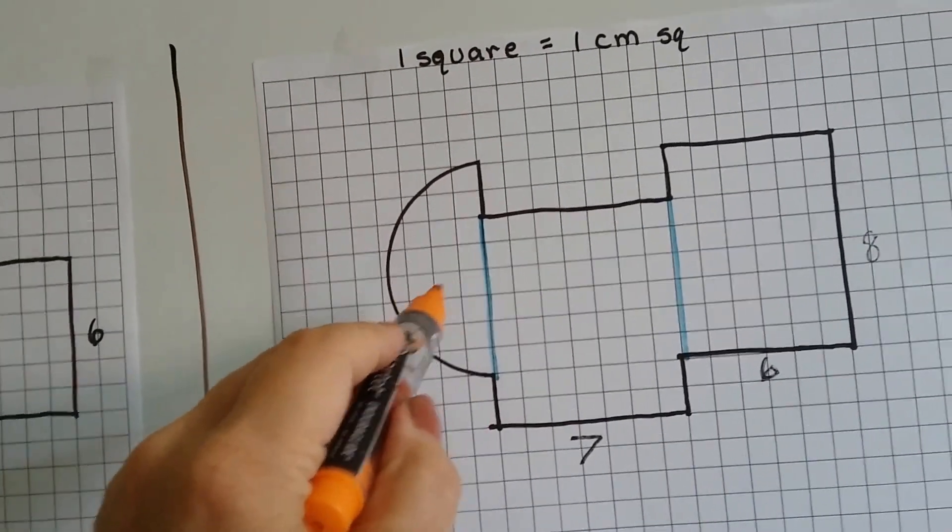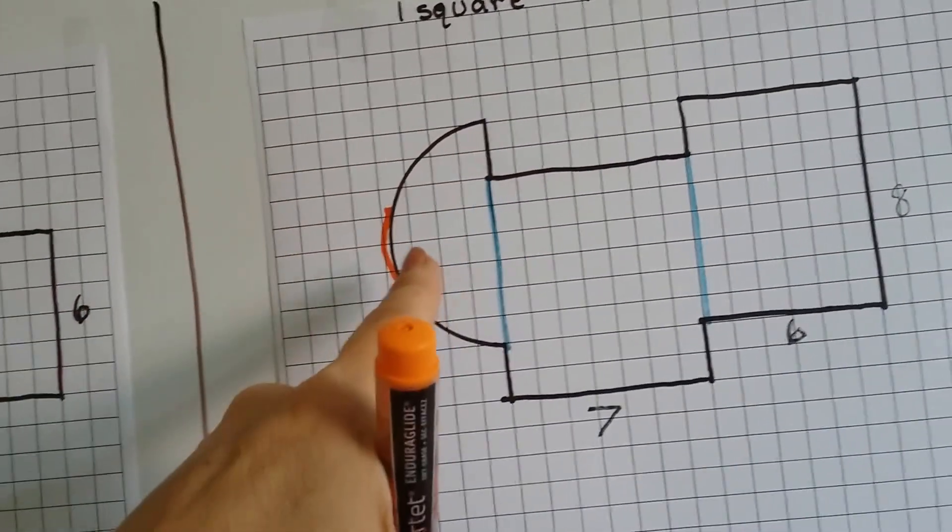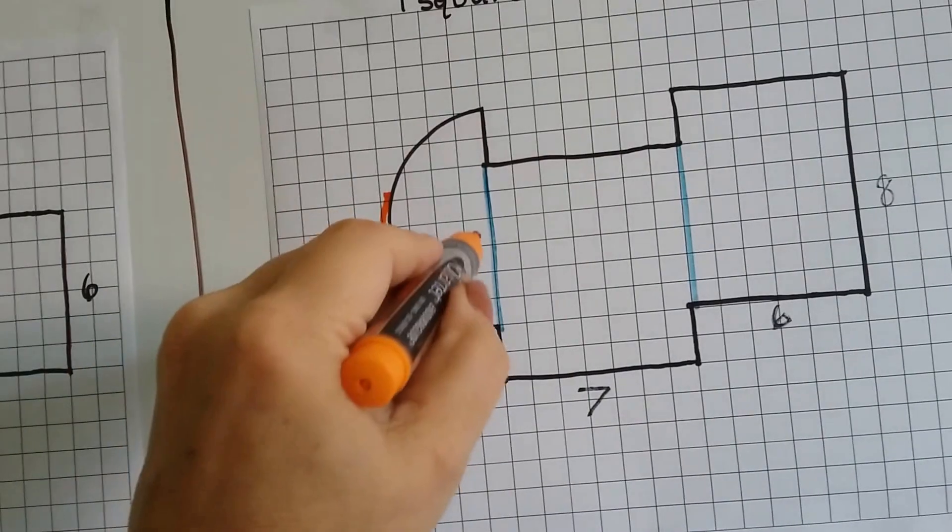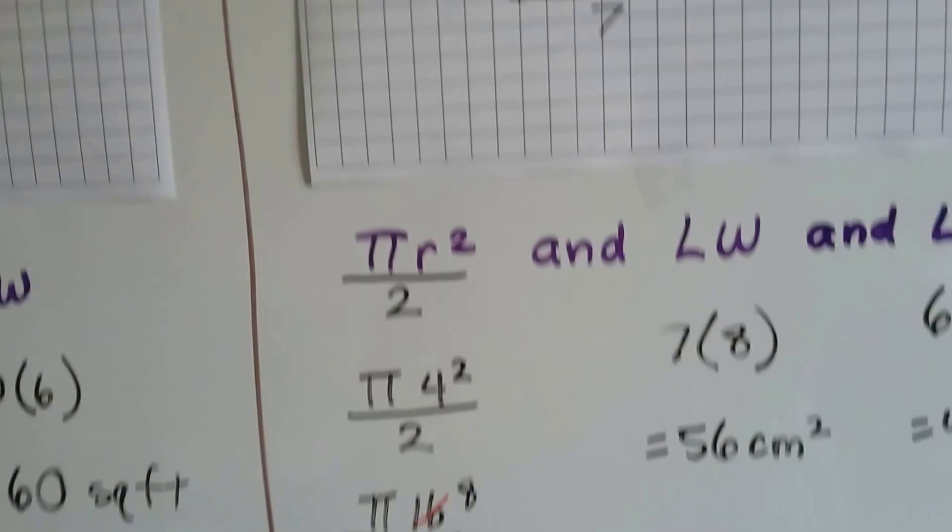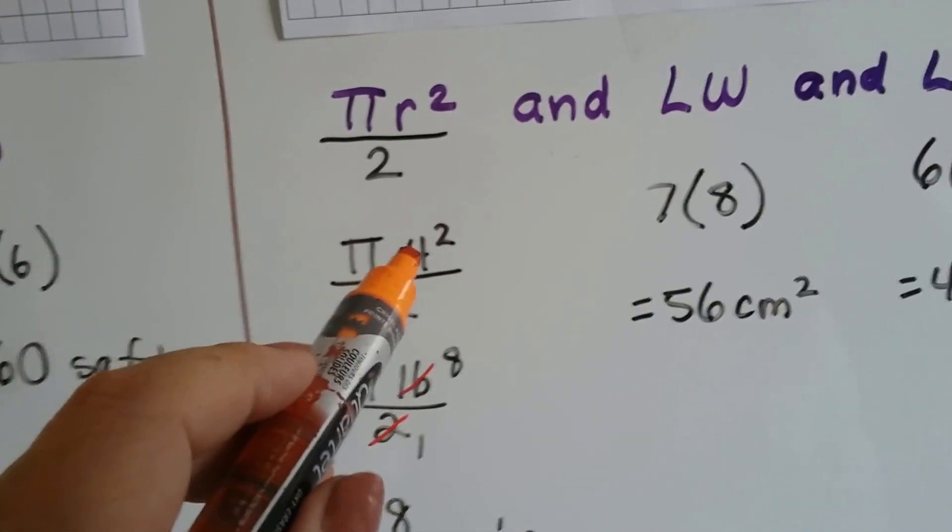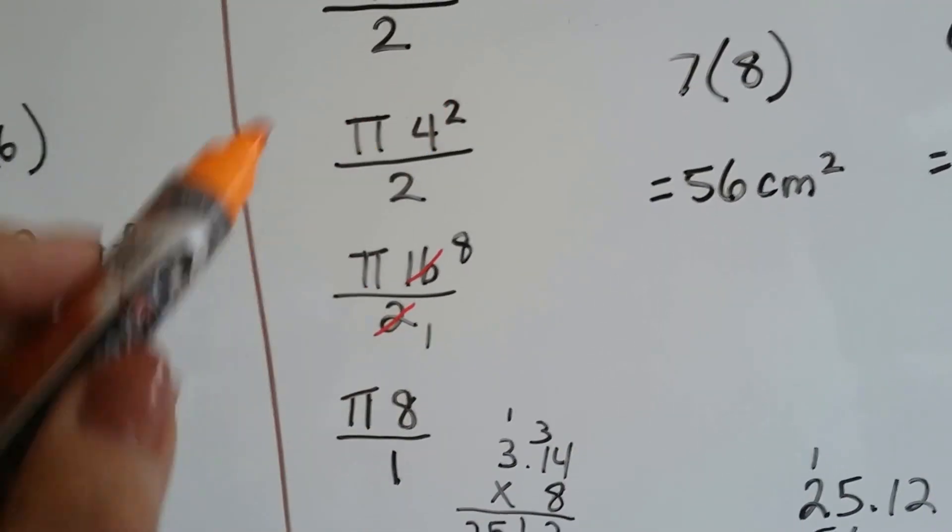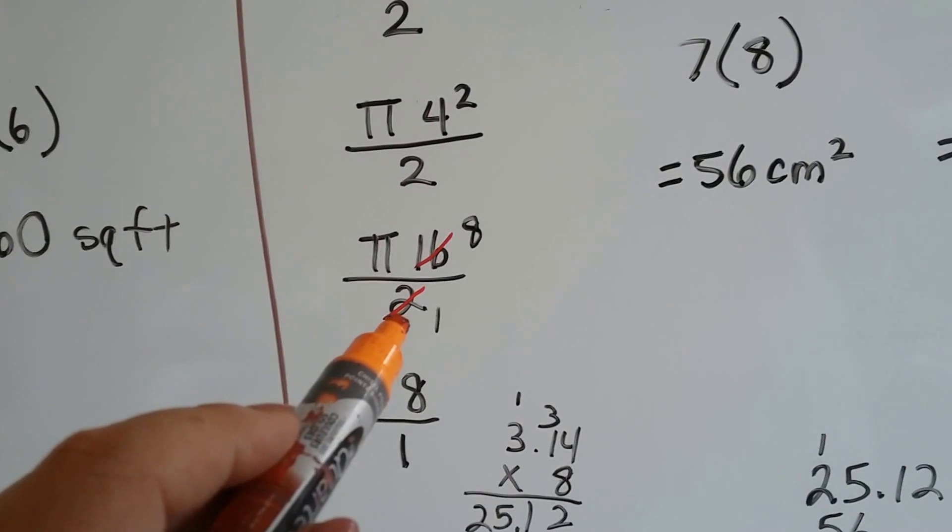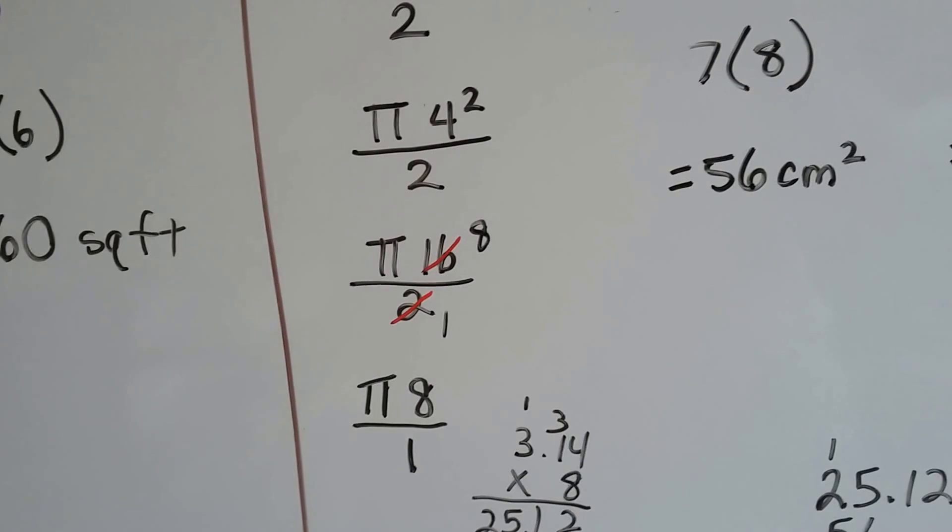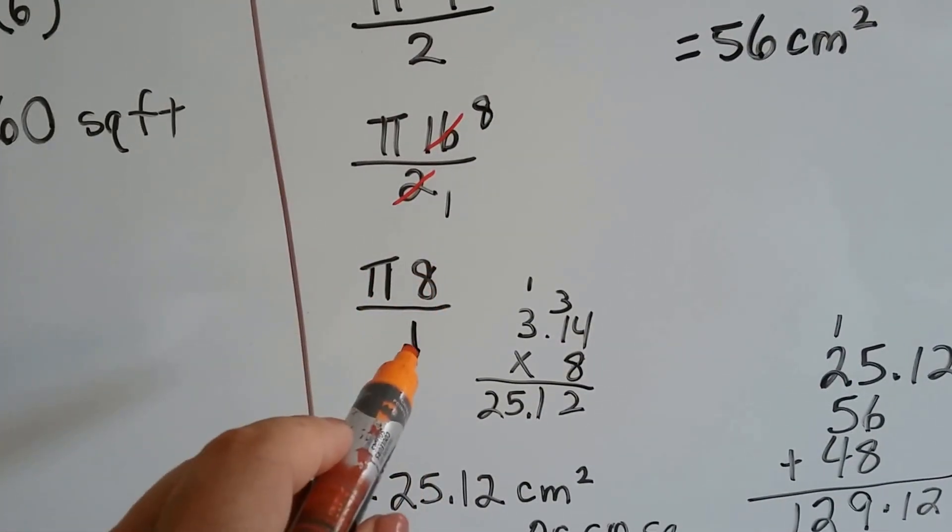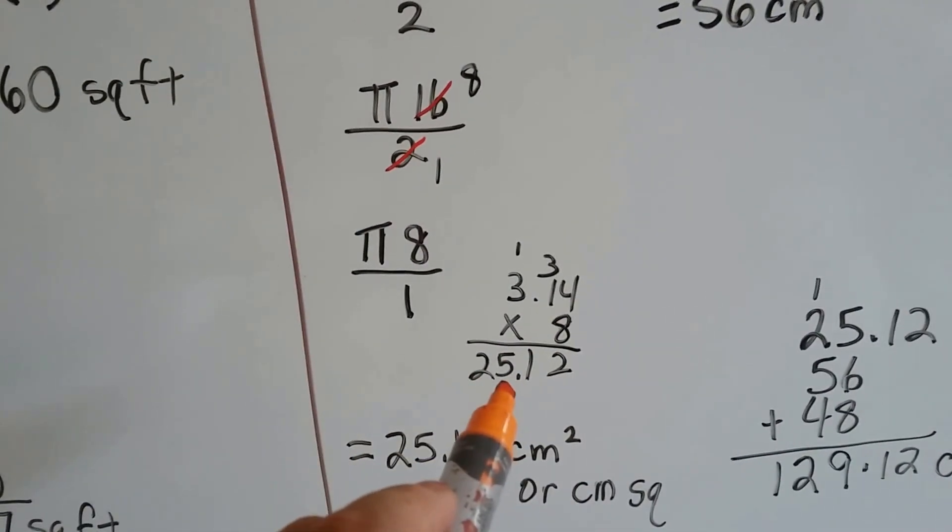So, pi times the radius times the radius. So, we count how many boxes? 1, 2, 3, 4. And my drawing was a little off. I meant for it to be 4 complete boxes. So, the radius is going to be from the center of the circle to here, and that's 4. So, we've got pi times 4 times 4 over 2. Well, 4 times 4 is 16, so now I've got pi times 16 divided by 2. Well, I can cross-cancel this 2 as a 1 and this 16 as an 8, and we end up with pi times 8 over 1, which is the same thing as pi times 8.